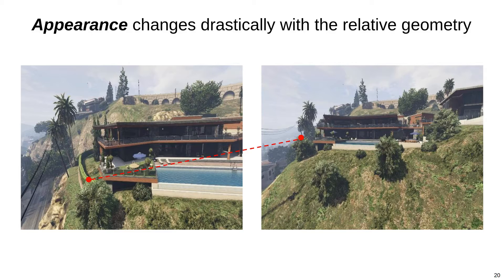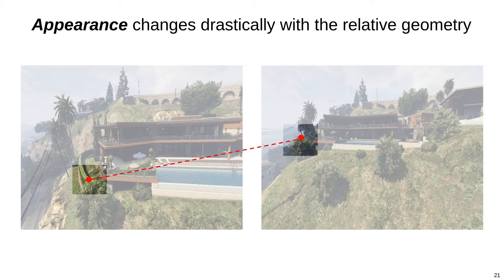Consider this pixel association here. It might take a second for you to convince yourself that these two pixels belong to the same 3D point, given how different the images look. Focusing on the local region around these pixels emphasizes how different the raw color values are.